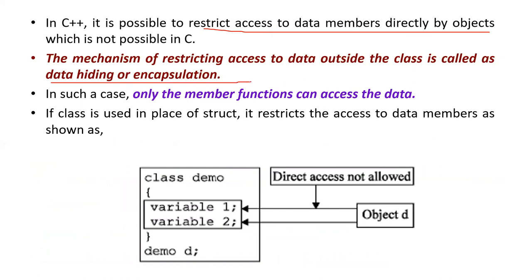It is possible to restrict the data — this is called data hiding or encapsulation. Only the member function can access the data. If a class is used in place of a structure, it restricts access to data members.